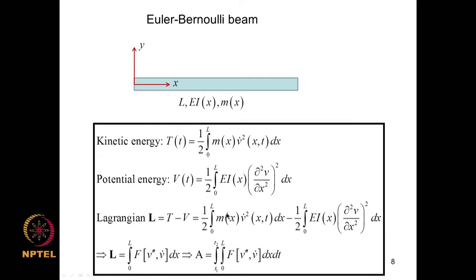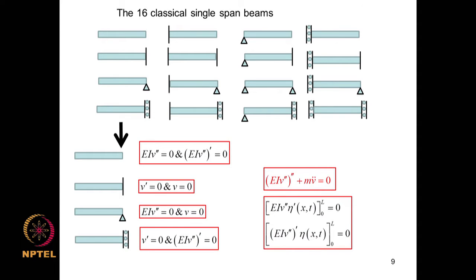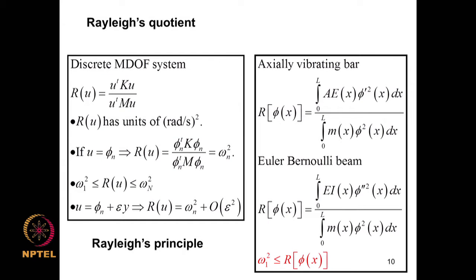We then moved on to the theory of Euler-Bernoulli beams. Using Hamilton's principle we derived the governing equation and the relevant boundary conditions. We saw that the field equation in free vibration has a specific form, and there are 16 combinations of single-span beams which emanate from the application of Hamilton's principle. In the analysis of free-vibration characteristics, we began by discussing Rayleigh's quotient, which we formulated for discrete multi-degree-of-freedom systems and a few continuous systems.